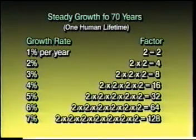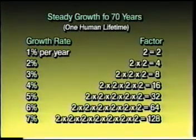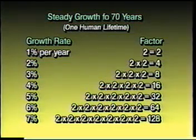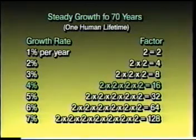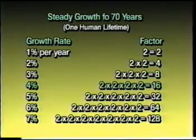There's another beautiful consequence of this arithmetic. If you take 70 years as a period of time — roughly one human lifetime — then any percent growth continued steadily for 70 years gives an overall increase by a factor that's very easy to calculate. For example, four percent per year: multiply four twos together and you get a factor of 16.